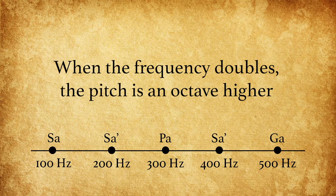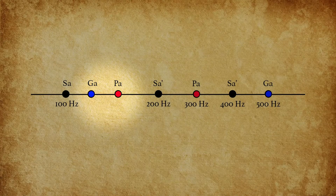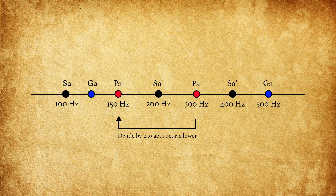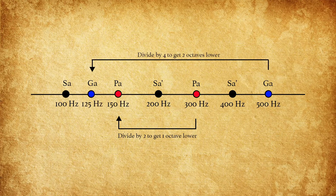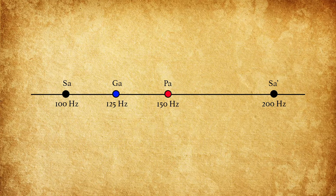As we can see here, when the frequency in Hertz doubles, the pitch is an octave higher. If we are to bring the position of Ga and Pa to the first octave, we have to divide Pa by 2 because it is in the second octave — therefore, 300 divided by 2 is 150. Similarly, we have to divide Ga by 4 because it is in the third octave — so 500 divided by 4 equals 125. Bringing them into the same first octave, the distance is Shadja at 100, Gandhar at 125 and Pancham at 150. Therefore, the positions of Sa, Ga and Pa provided by nature are in the proportion of 100 : 125 : 150.